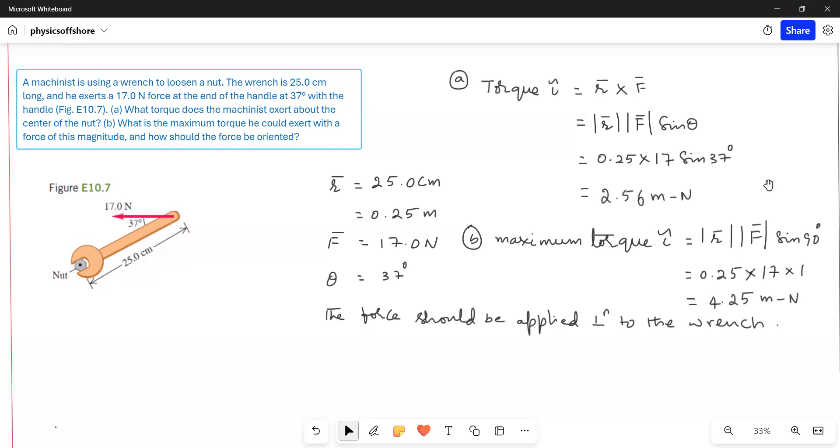This is a simple problem based on torque. We know torque is equal to R cross F bar. Here R bar is the position vector, is given as 25 centimeters.